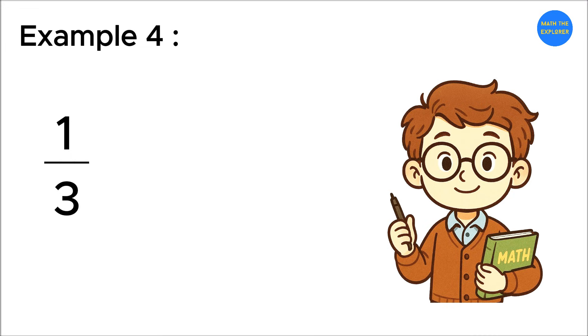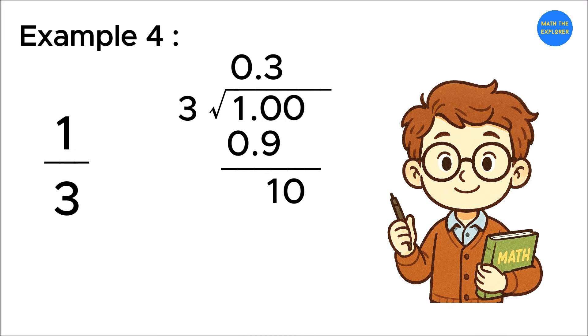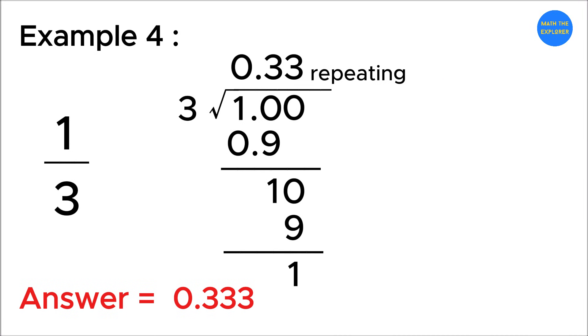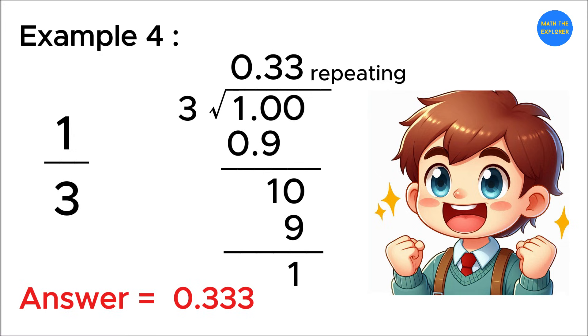One-third is interesting. Divide one by three. Three goes into one, zero point three. Remainder one. Bring down another zero. Three goes into ten, three again. Remainder one. This pattern repeats forever. So, one-third equals zero point three three three and so on. Wow! How cool is that? It just keeps on going and going. So, whenever you see one-third, think of that endless chain of threes. Pretty amazing, right?